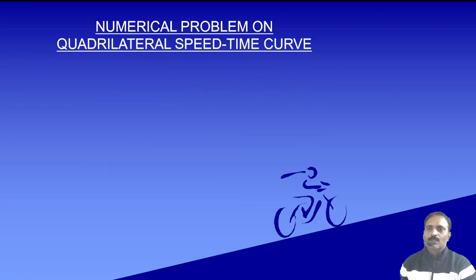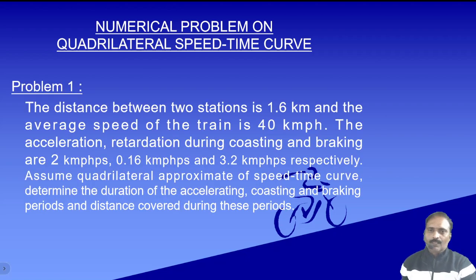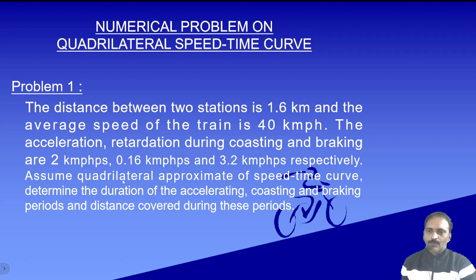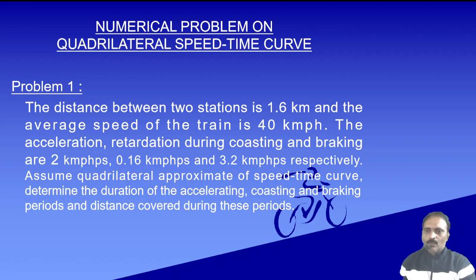Now let us solve a numerical problem. The distance between the two stops is 1.6 km, average speed is 40 kmph, acceleration alpha is 2 kmph/s, coasting retardation beta-c is 0.16 kmph/s, and braking retardation beta is 3.2 kmph/s. From these parameters we can identify this as a quadrilateral speed-time curve problem.